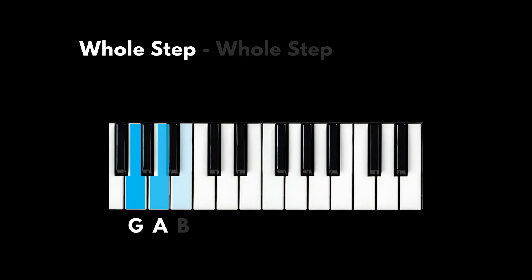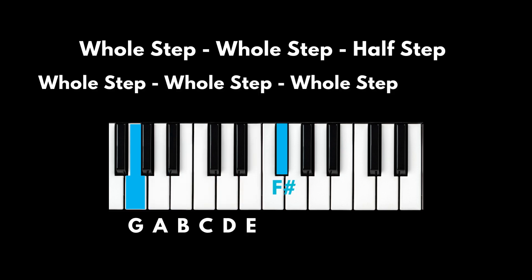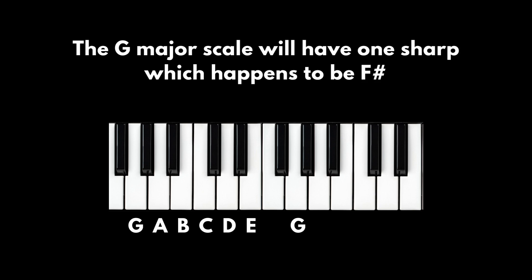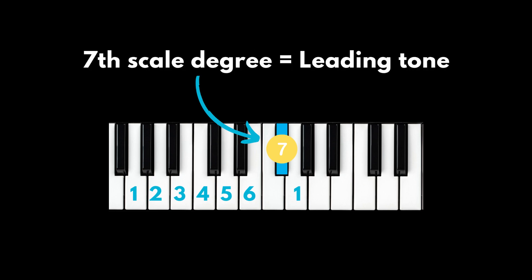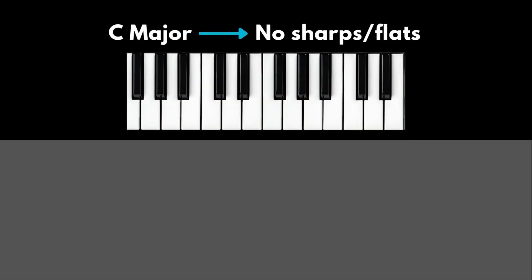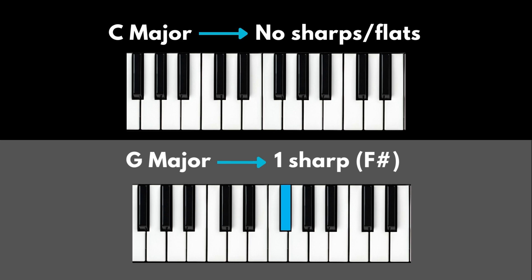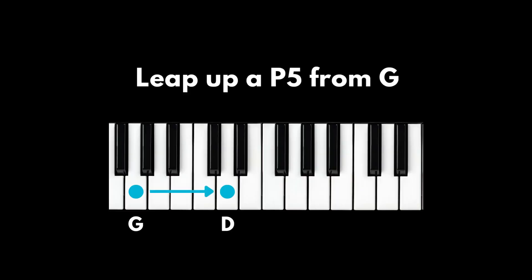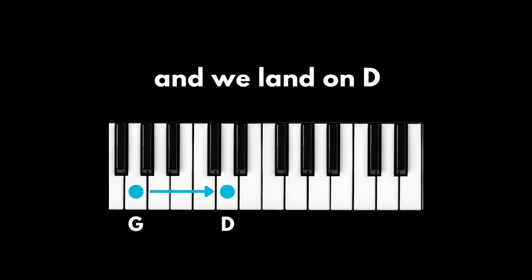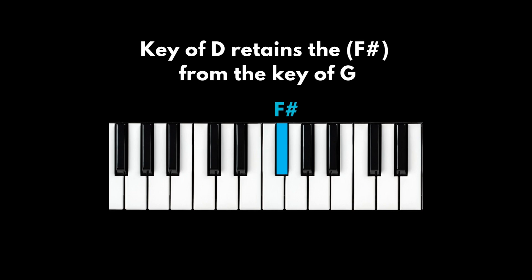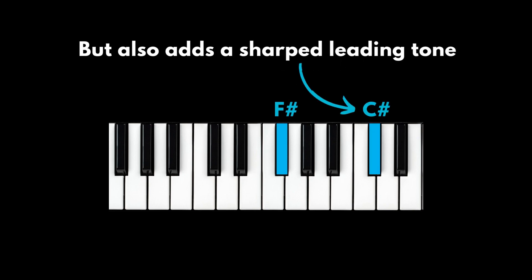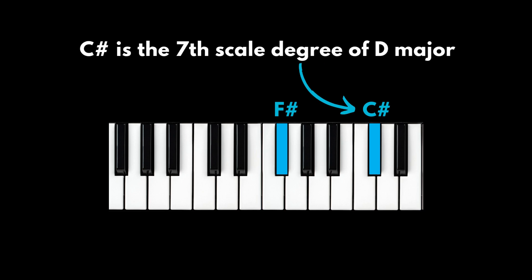Using the major scale pattern of whole step, whole step, half step, whole step, whole step, half step — the G major scale will have 1 sharp, which happens to be F sharp, which is the 7th scale degree of G major. The 7th scale degree of a major scale is also called the leading tone. So we kept the sharps from C major, which are no sharps, then added a sharp leading tone, which is the note F sharp. Going up a perfect fifth from G major, we land on D. The D major scale retains the F sharp from G major but also adds a sharped leading tone — a C sharp — which is the seventh scale degree of D major.